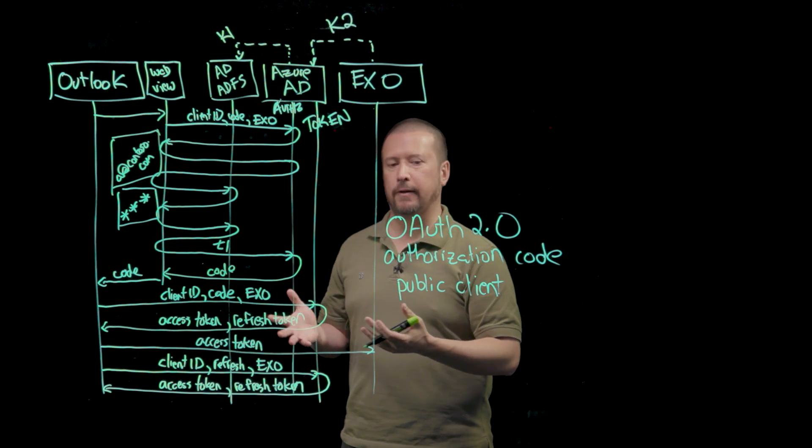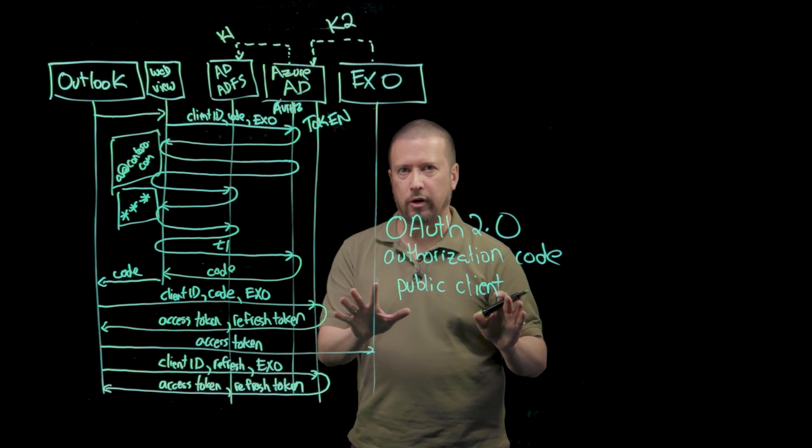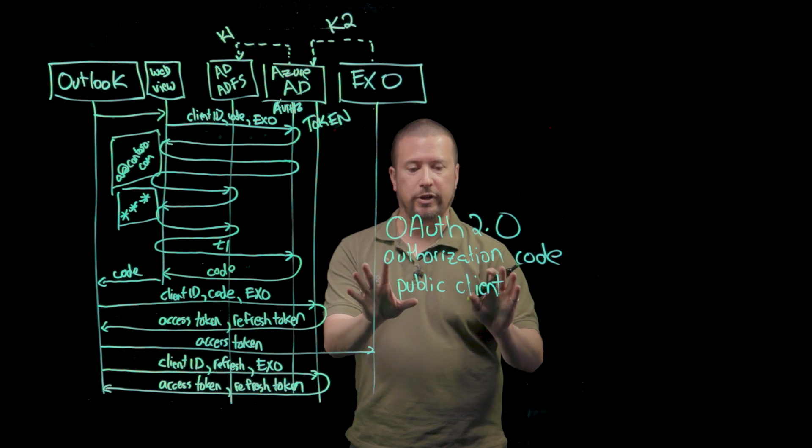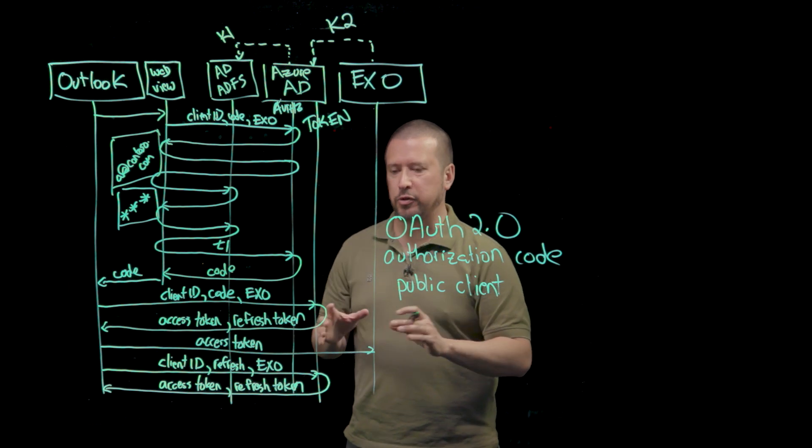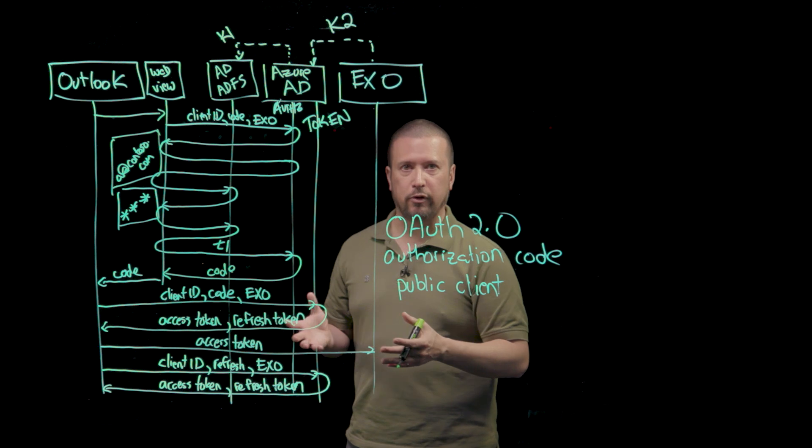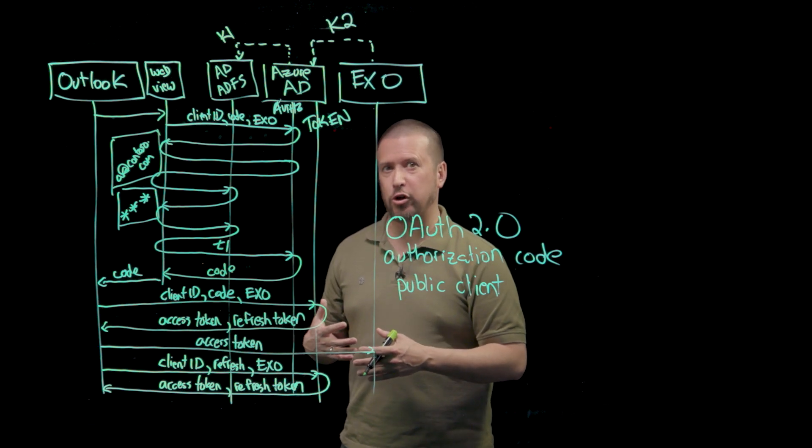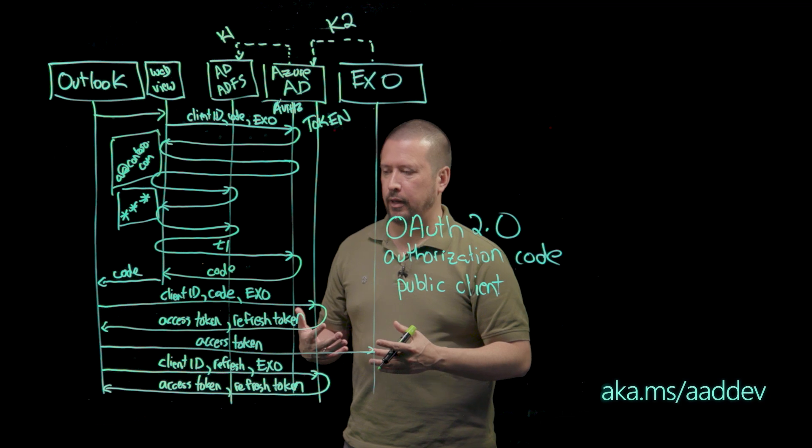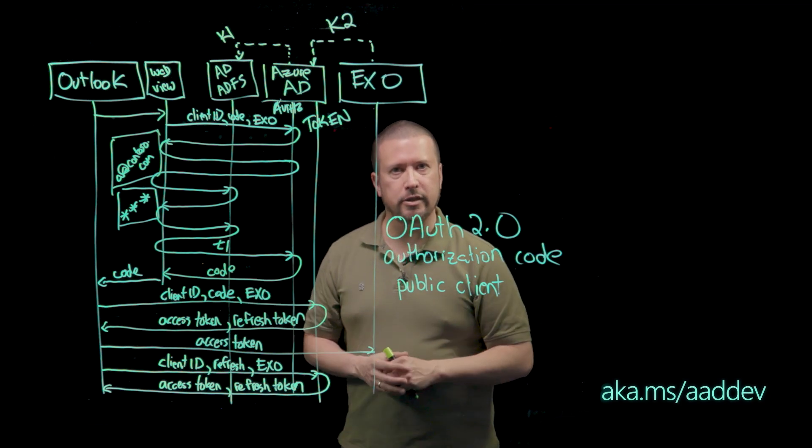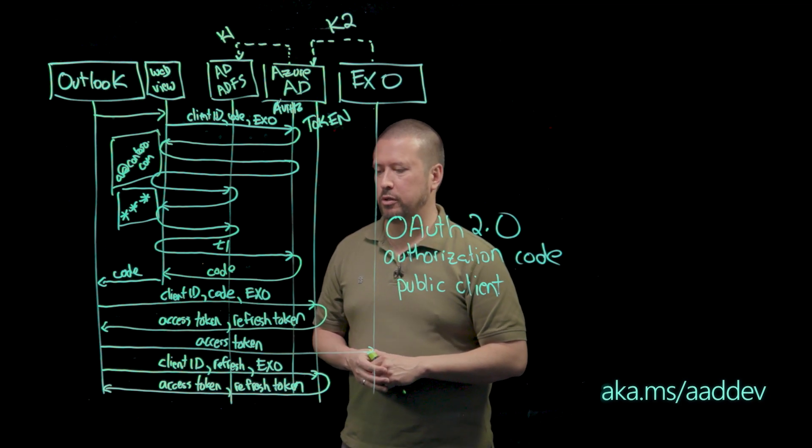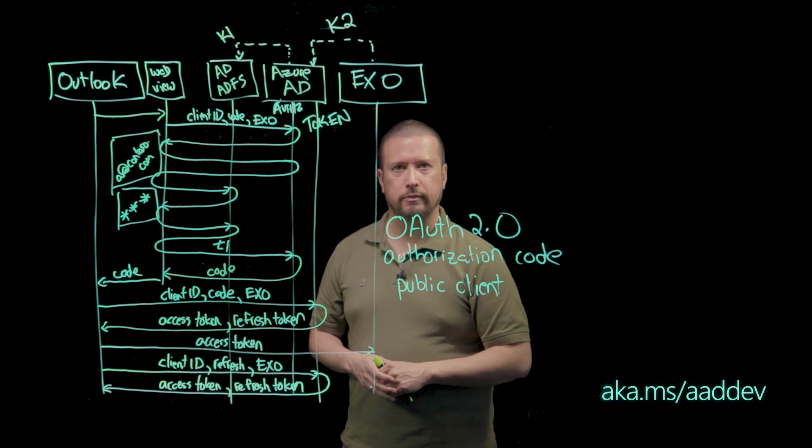That's why in the protocol standard, we call this a public client as opposed to a web server, which might do a similar flow that can have secrets. That's called a confidential client. And that's the basics of how modern authentication works with native client applications.